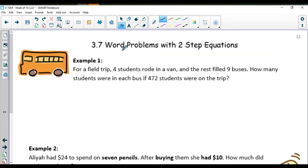At the top of page 12 we have 3.7 word problems with two-step equations. You should have your pencil ready, you should have your calculator on your desk, and you should also have your notes packet open to page 12. Do you have all those things ready right now?